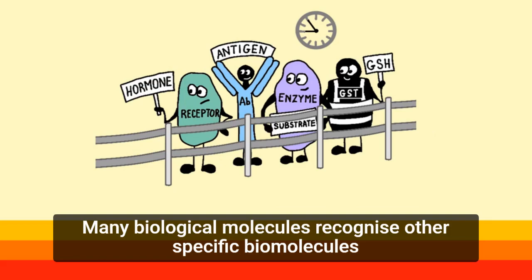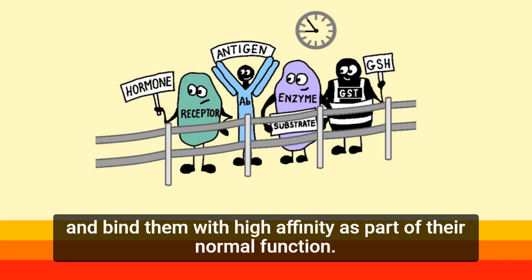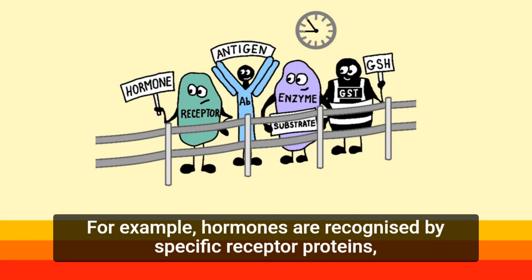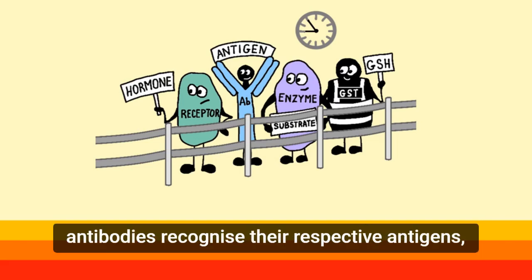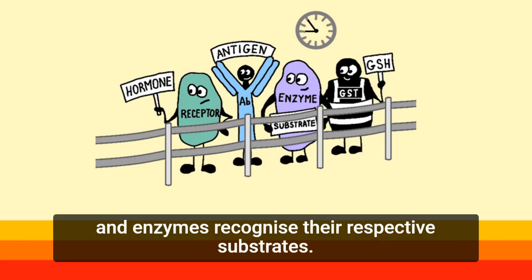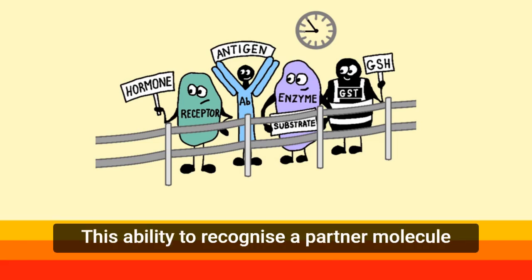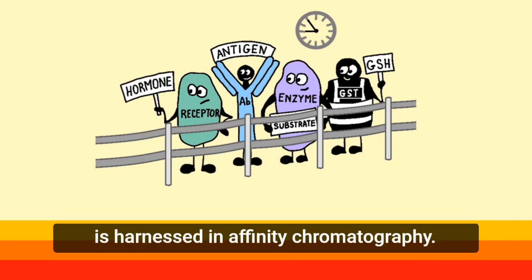Many biological molecules recognise other specific biomolecules and bind to them with high affinity as part of their normal function. For example, hormones are recognised by specific receptor proteins, antibodies recognise their respective antigens, and enzymes recognise their respective substrates. This ability to recognise a partner molecule is harnessed in affinity chromatography.